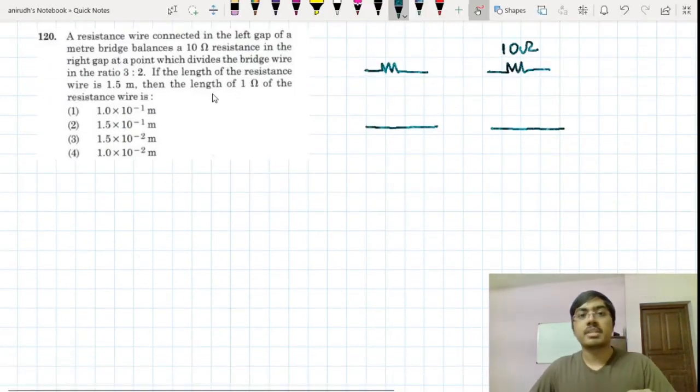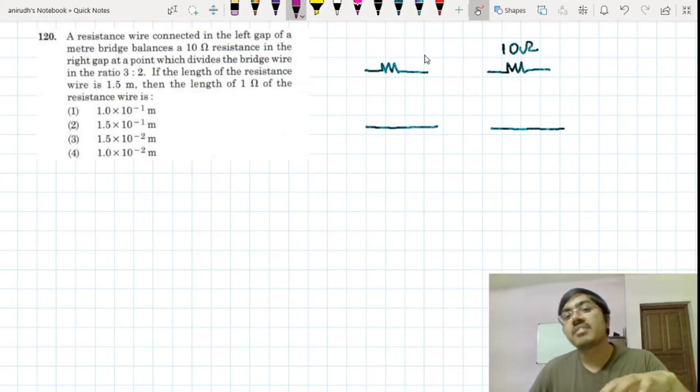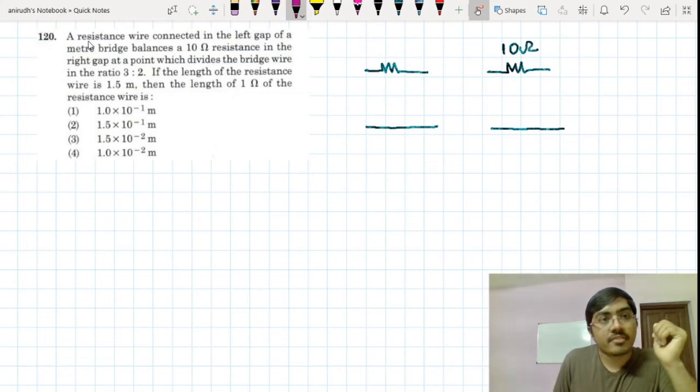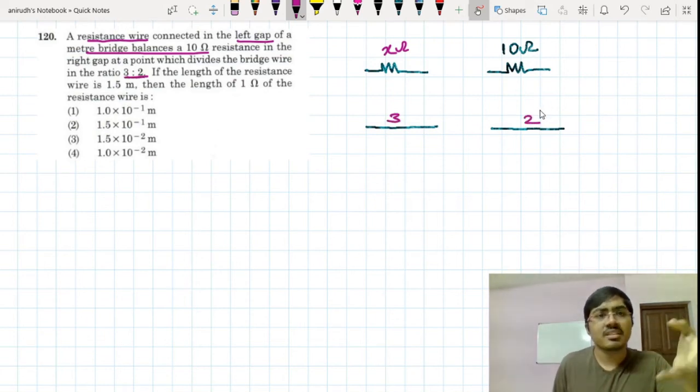Question number 120 is from the topic of current electricity, and this time a device called by the name of meter bridge has been asked in the paper. You have this kind of an experiment to be done in class 11th practicals. Resistance wire connected in the left gap of a meter bridge balances 10 ohm resistance in the right gap. So let's take this as x ohm resistance and here there is 10 ohm resistance.